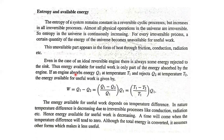We give the input energy as Q1 at temperature T1, and it is rejected as energy Q2 at temperature T2. So, the available useful work is equal to Q1 minus Q2. The ratio can be written as (Q1 minus Q2) divided by Q1, which by Carnot's theorem equals (T1 minus T2) divided by T1.